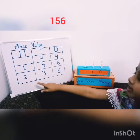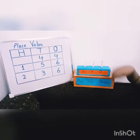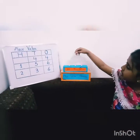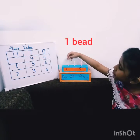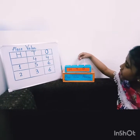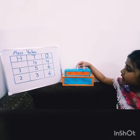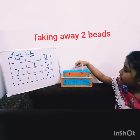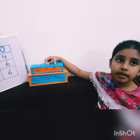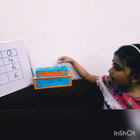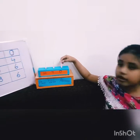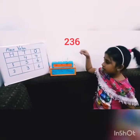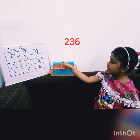My next number is 236. Here is already 1, so I will put 1 more bead — it becomes 2. Here is already 5, so I will take out 2 — it becomes 3. Here is already 6, so we don't have to change the beads. This is 236.